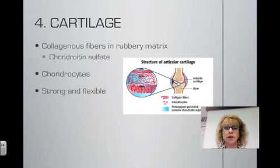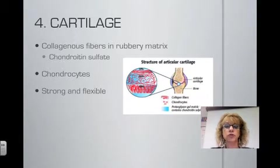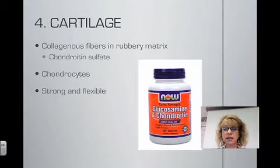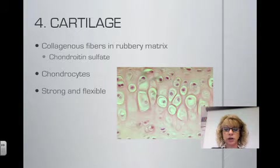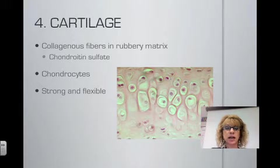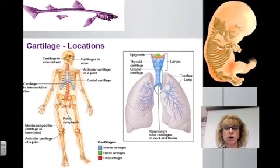We're now going to talk about the fourth type of connective tissue: cartilage. Cartilage contains an abundance of collagenous fibers and a rubbery matrix. That matrix is made of chondroitin sulfate, which is a protein-carbohydrate complex. You may have heard of chondroitin sulfate because it's advertised on TV as a supplement used for improving arthritis. Chondrocytes are the cells that produce cartilage. They secrete collagen and the chondroitin sulfate. Cartilage is strong and flexible, and we find it in shark skeletons, which are made almost entirely of cartilage.